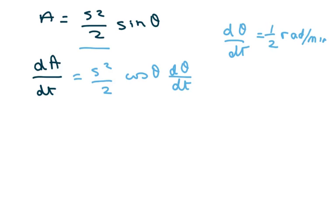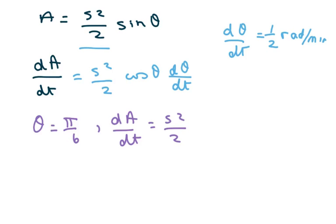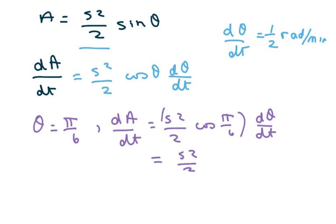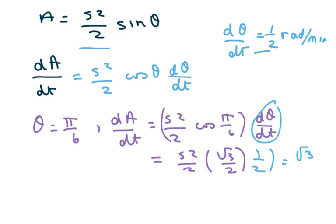The next thing I'm going to do is evaluate when theta equals pi over 6. Then we get the derivative of area with respect to time equals S squared over 2 times cosine of pi over 6 times the derivative of theta with respect to time. Cosine of pi over 6 is square root of 3 over 2, and dθ/dt equals one half. So the answer is square root of 3 times S squared over 8.